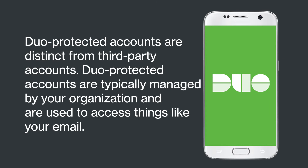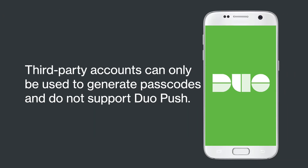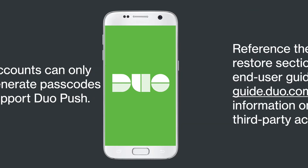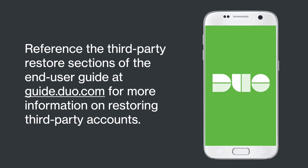Duo Protected accounts are distinct from third-party accounts. Duo Protected accounts are typically managed by your company, university, or other organization and are used to access things like your email. Third-party accounts can only be used to generate passcodes and do not support Duo Push. Please reference the third-party restore sections of the End User Guide for more information on restoring third-party accounts.